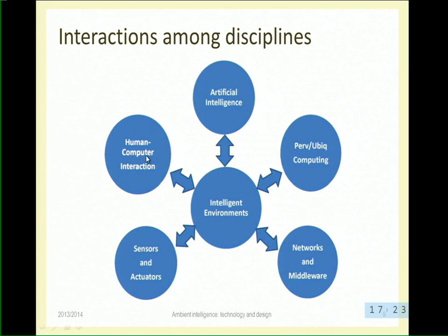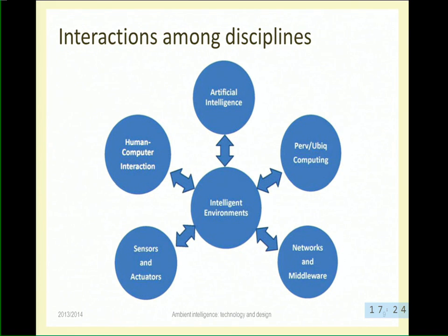We also need actuators - to do something. When the ambient intelligence understands you want the garage door open because you are about to leave home, you need something that makes that happen - something that actuates. Actions can be physical - closing a circuit to switch on a light - or giving a notification on your mobile, playing an audio message in your house, but something that has an impact over the environment where you are living. The output of all the reasoning cannot stay inside the system - it needs to go out to the user eventually.